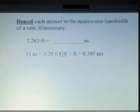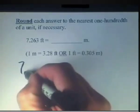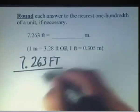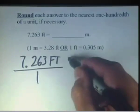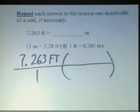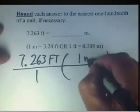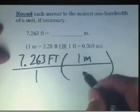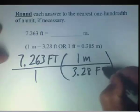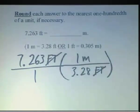Given a couple of different values here, let's start by setting up our fraction, which in this case is 7.263 feet over 1. We can use one of our two conversion factors and set up a unity fraction. The one I'm going to choose here is: one meter is approximately the same as 3.28 feet. In this fashion, the feet cancel, leaving us with meters.